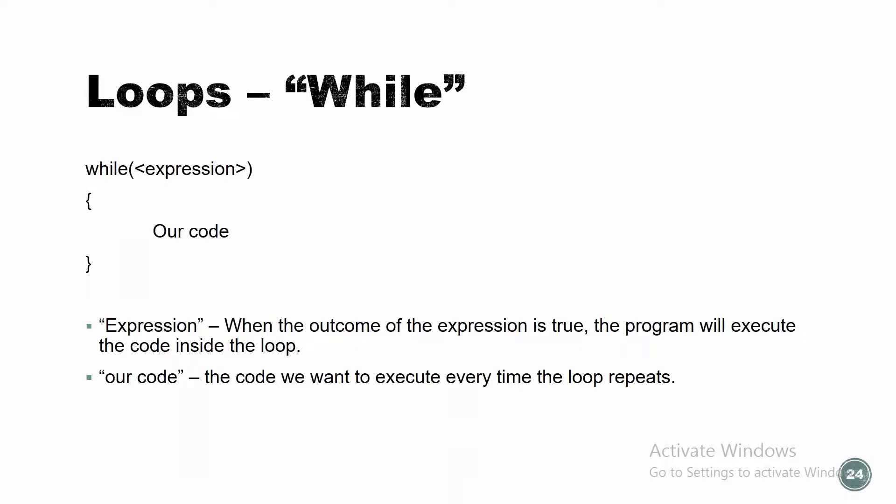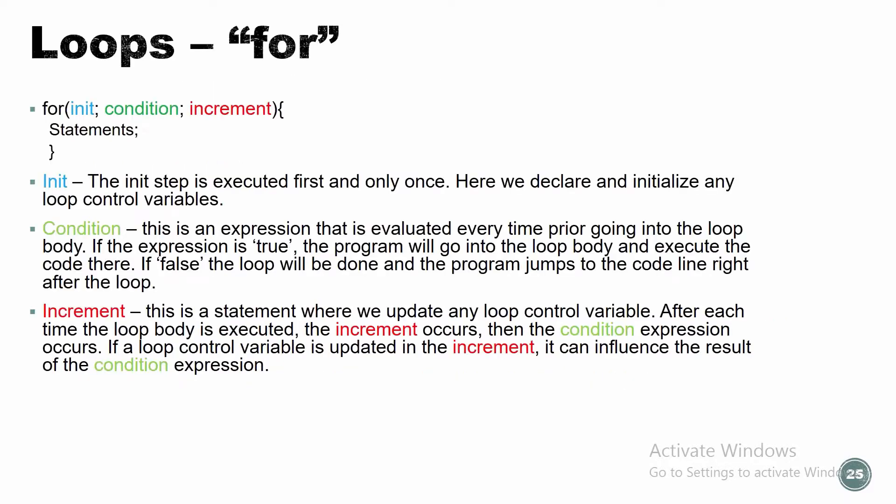Let's look at the while loop syntax: 'while' followed by some expression in parentheses, then a code block in curly brackets. What I mean by expression is: the compiler calculates the expression inside the parentheses — if the outcome is true, it goes inside the curly brackets and executes the code. The loop stops once the expression inside the while becomes false. When the outcome is true, the program executes the code inside the loop, repeating every time the loop runs.